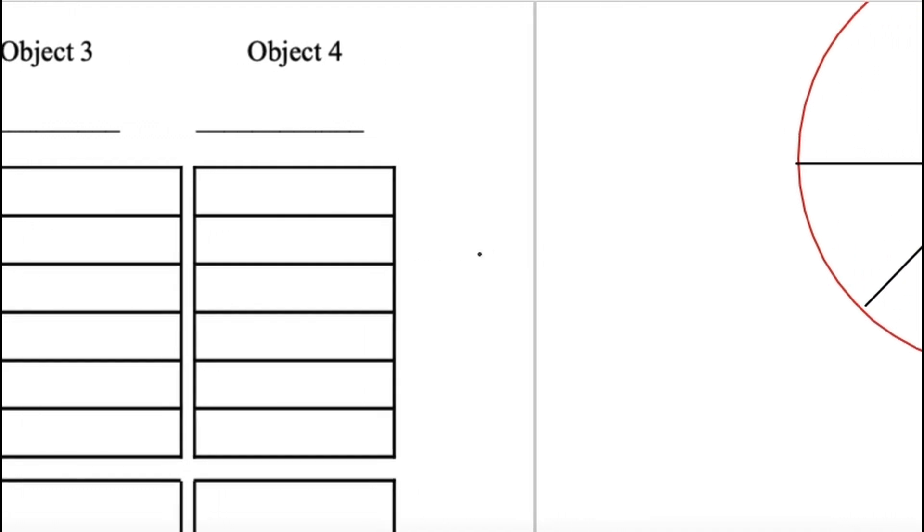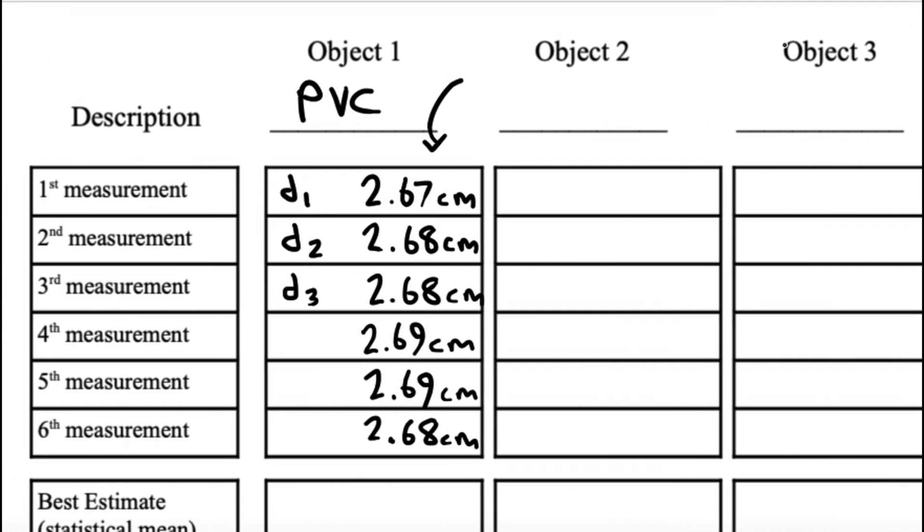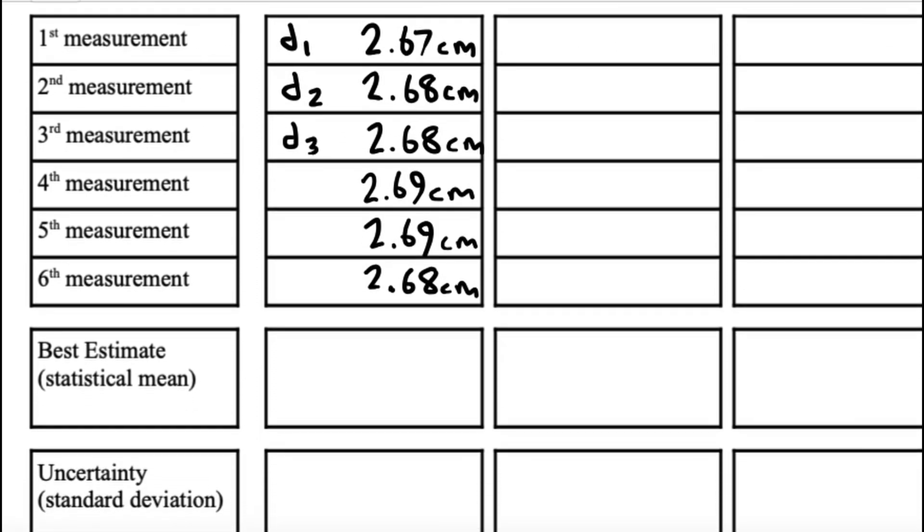If it was right on the next hatch mark of 2.7, I would say like 2.70. I'm saying that it's about halfway between. So I guessed this hundredth digit. So as I'm walking around and you're doing this lab, I want to see that you have given the right number of digits.